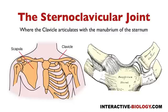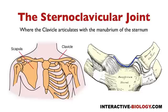Then we have the interclavicular ligament, and that's this ligament that goes all the way across here. The interclavicular ligament extends between the two sternal ends of the two clavicles, basically connecting one clavicle to the next. It extends across the manubrium of the sternum and connects with the superior margin of that sternum. So to recap: we have the anterior and posterior sternoclavicular ligaments, the costoclavicular ligament, and the interclavicular ligament.